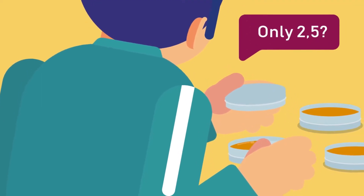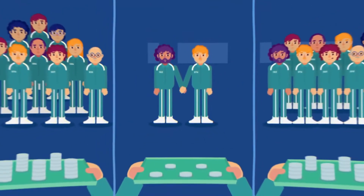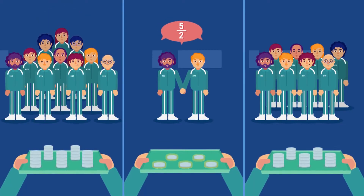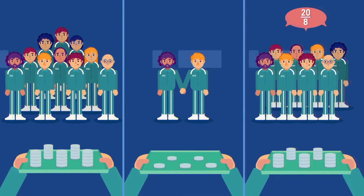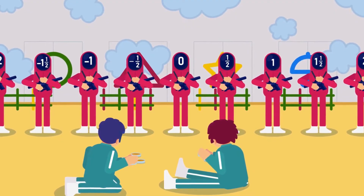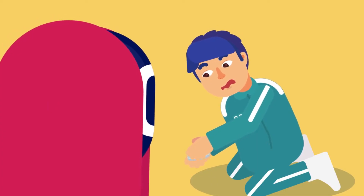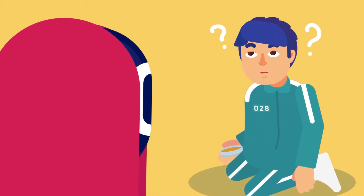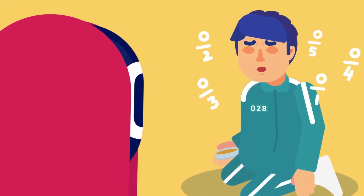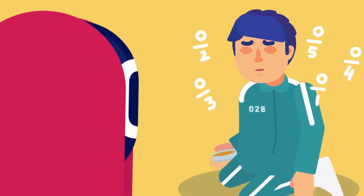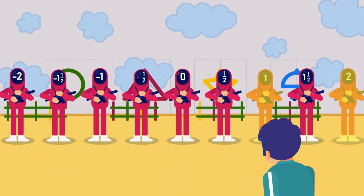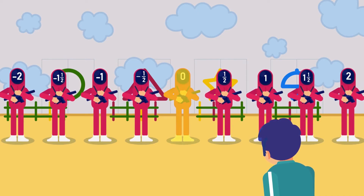Now consider 2.5. Is 2.5 a rational number? Yes, it is, because it can be represented as 25 cookies per 10 people, 5 cookies per 2 people, or 20 cookies per 8 people. Therefore, any number that can be represented as a simple fraction is termed a rational number. Now here is a special case: is 0 a rational number? 0 can be represented as 0/2, 0/3, 0/4, or 0/5 — all these fractions have the final answer as 0. Therefore, 0 is a rational number. So rational numbers contain positive integers, negative integers, 0, and common fractions.